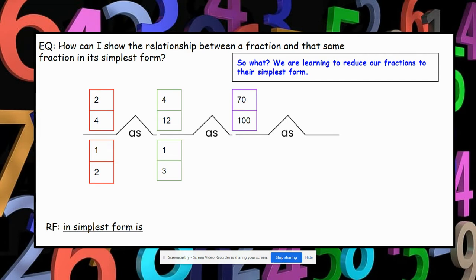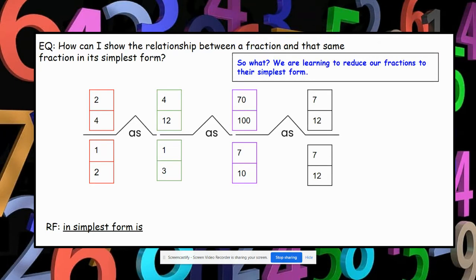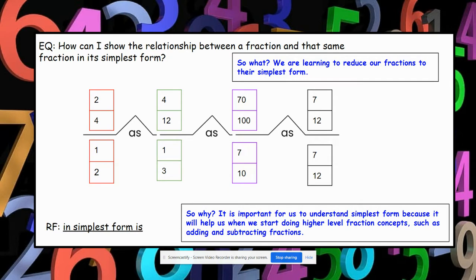Seventy-hundredths in simplest form is seven-tenths, as seven-twelfths in simplest form is... this is sort of a trick one because seven-twelfths is already in simplest form. So we're going to talk about the 'so why,' because we always want to